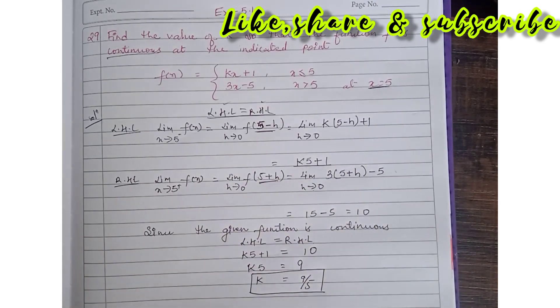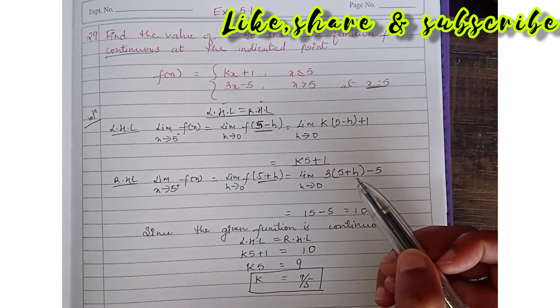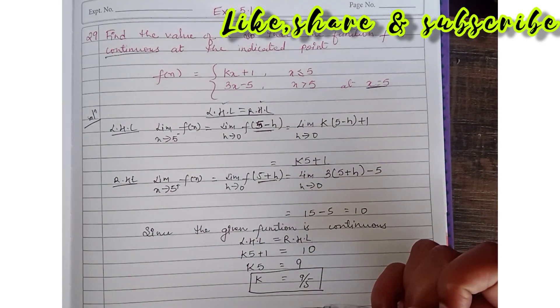So simply you see, we find LHL and RHL and then we equate the values with each other because our function is continuous. So here we have to find the value of k, that is 9 by 5.